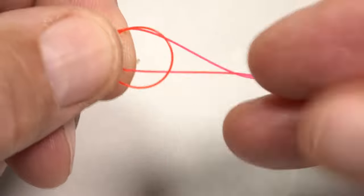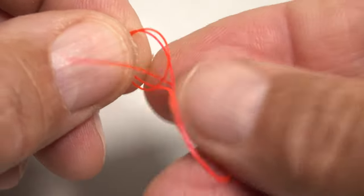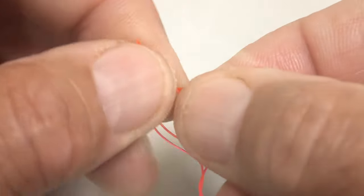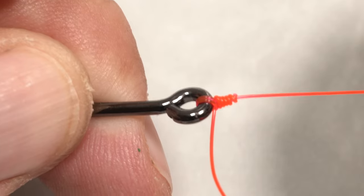Then, wrap the clinch knot as usual and pass the tag end through the two loops before seating it. Having two strands of line around the eye of the hook produces a stronger connection that's needed in certain fishing situations.